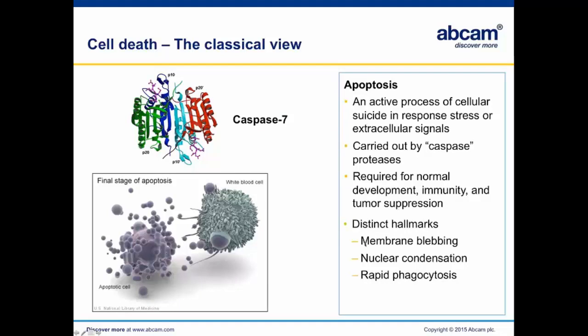Apoptosis is defined by distinct hallmarks, which are a function of the activation of these caspase proteases. When caspases become active in a cell, that cell will shrink, its membrane will bleb and form distinctive blistery features, and the nucleus will condense. In vivo, these changes lead to the expression of 'find me' and 'eat me' signals on the dying cell. The dying cell is then rapidly recognized by a phagocytic white blood cell, making apoptotic cell death a tidy and non-inflammatory way to eliminate cells. This happens many billions of times in our bodies every day without causing much of an inflammatory or immune response.